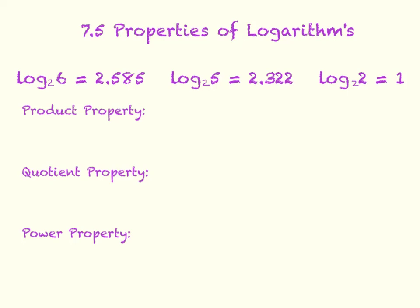Section 7.5: Properties of Logarithms. At this point, you do not have a calculator, so the only three logs that we know are: log base 2 of 6 is 2.585, log base 2 of 5 is 2.322, and log base 2 of 2 is 1. For the following properties, we also agree that b, n, and m are greater than 0, and b cannot equal 1.